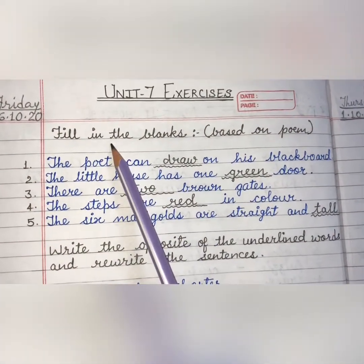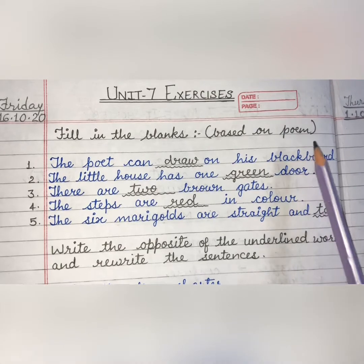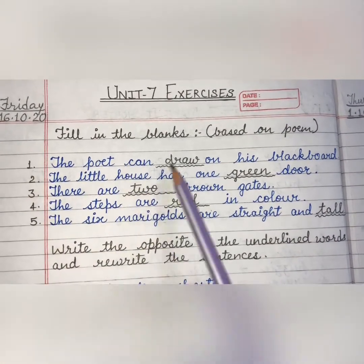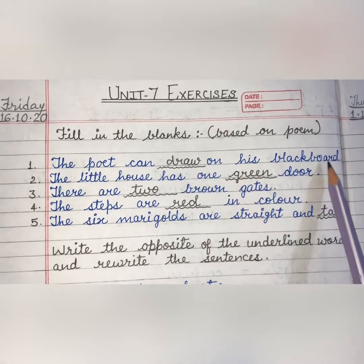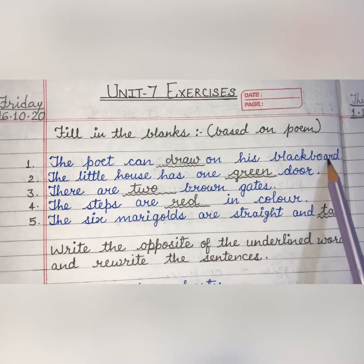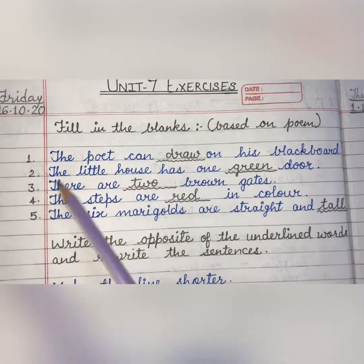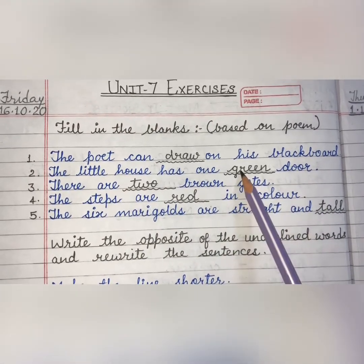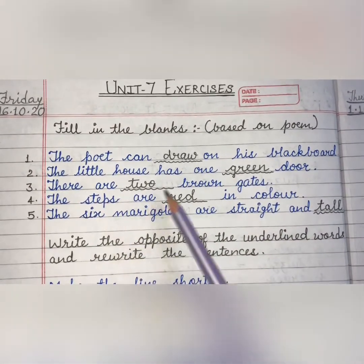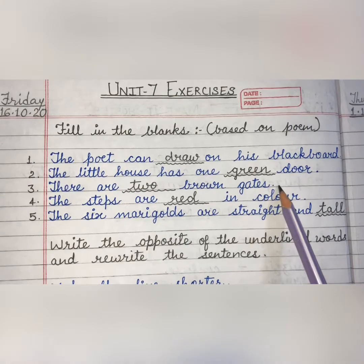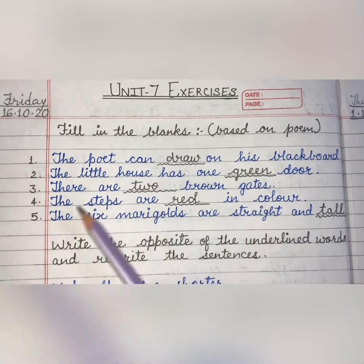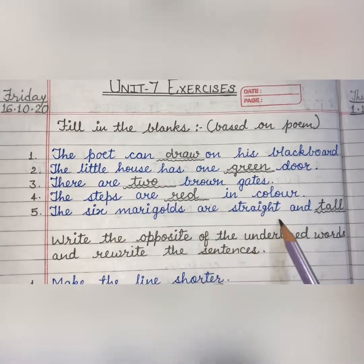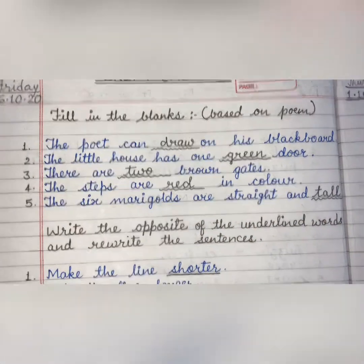Then we have fill in the blanks based on the poem. On my blackboard, I can draw. First is, the poet can draw on his blackboard — what can you do on the blackboard? Draw. The little house has one green door. There are two brown gates. The steps are red in colour. The six marigolds are straight and tall.